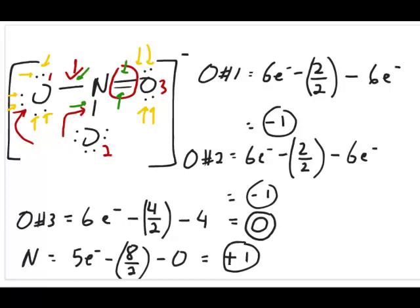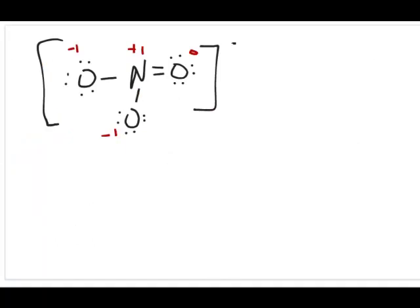So in this structure we have formal charges of negative one, negative one, zero, and positive one for the oxygens and nitrogen. An important property to note: if you calculate correctly, the sum of all formal charges should equal the overall charge of the species. In this case the total charge is negative one. Adding negative one plus positive one plus zero plus negative one gives negative one — correct!